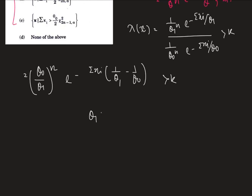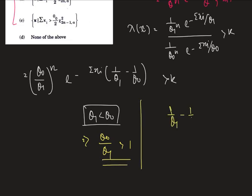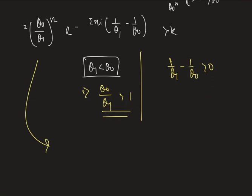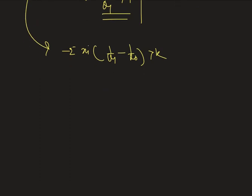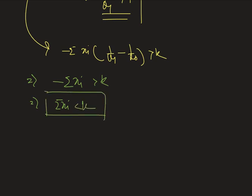Now, given by the question, theta 1 is less than theta naught. So we can write theta naught divided by theta 1 is greater than 1, and also 1 by theta 1 minus 1 by theta naught is greater than 0. Therefore from this equation we can write minus sum over xi multiplied by (1 by theta 1 minus 1 by theta naught) is greater than k, which results in minus sum over xi greater than k, and we can write sum over xi less than k, which is the critical region.